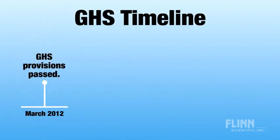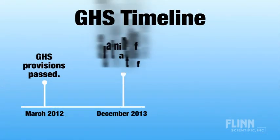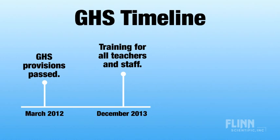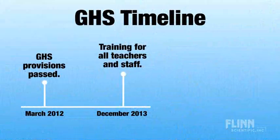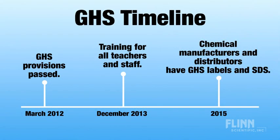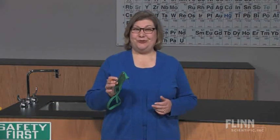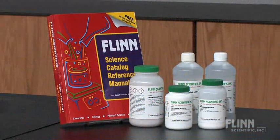Passage of the GHS provisions in March 2012 started a three-year clock for employers and chemical manufacturers to comply with the new requirements. The first deadline under the law is December 2013. By this date, schools and school districts must provide training for teachers and staff to understand how to read GHS labels and also the new safety data sheets. The M in MSDS has been dropped. Chemical manufacturers and distributors have until 2015 to reclassify chemicals and produce GHS formatted labels and SDS for all new products. What this means is that training comes before implementation.